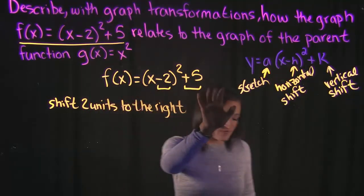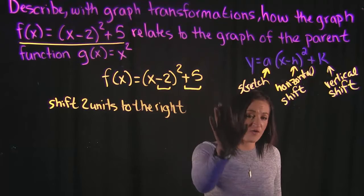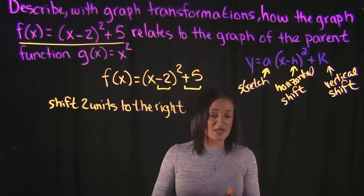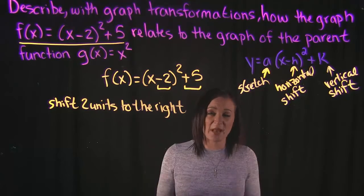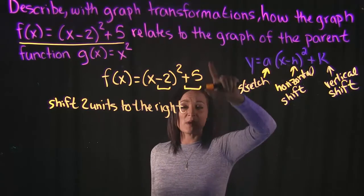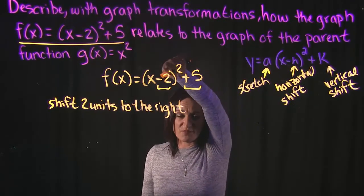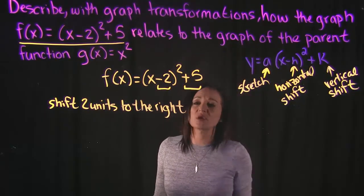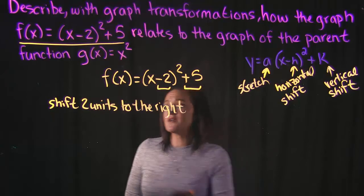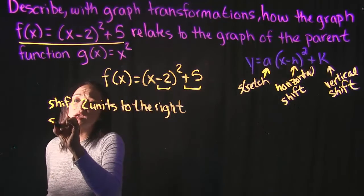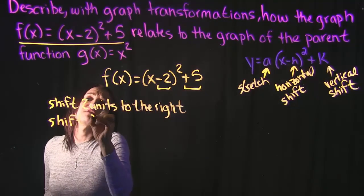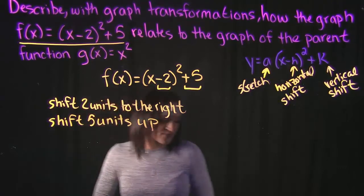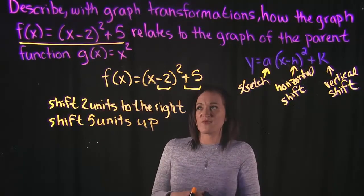We also have plus 5 on the outside of the parentheses. Outside the parentheses, a plus means a plus and a minus means a minus. Inside the parentheses is a movement left or right; outside the parentheses is a movement up or down. Since it says plus 5, that means we are going to shift 5 units up — it's positive 5, so we're going up 5.